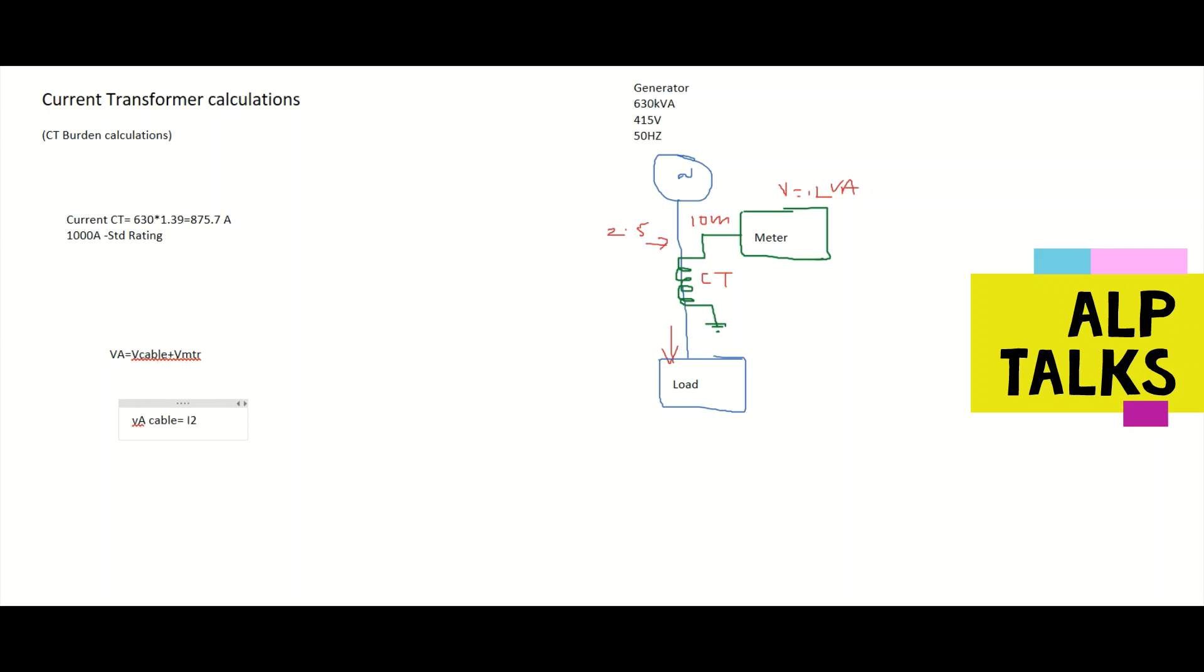The formula is I square R, I square R times 1 plus alpha, 1 plus alpha times temperature minus 20. So this is the formula for calculating resistance of the CT wire.